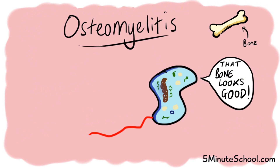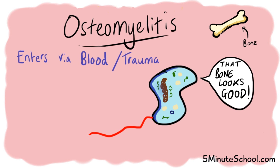When considering how osteomyelitis occurs, we need to know that the bacteria first has to enter the bone to cause the infection, and this happens either through the bloodstream or through some kind of trauma.